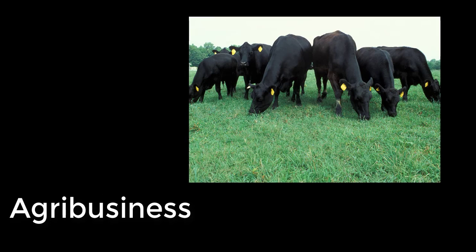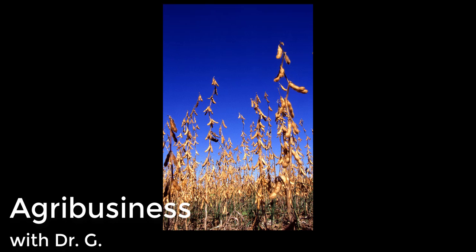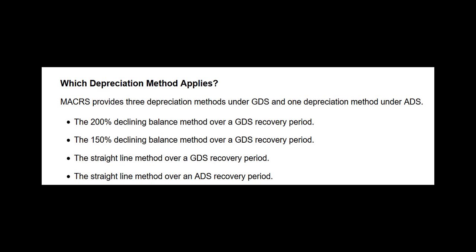In this video, we're going to learn about depreciation. Before we get started calculating depreciation and developing a depreciation schedule, I thought it would be wise to jump on the IRS website and look at the different methods of calculating depreciation that the IRS approves. Here we see the 200% declining balance method, the 150% declining balance method, and the straight line method. Those are the three we're going to cover in this video.